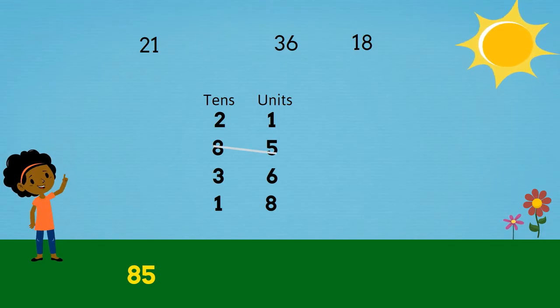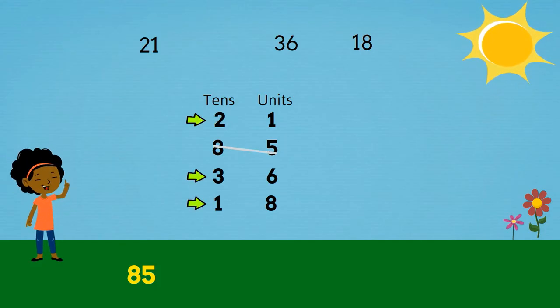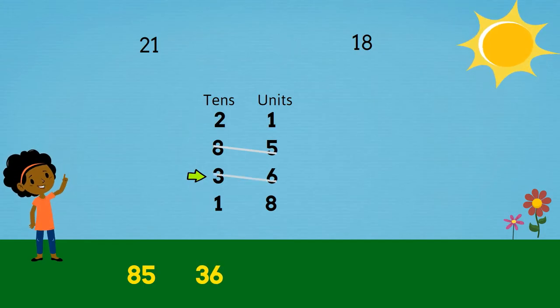Now we've got three numbers left. Which is larger? 2, 3 or 1? 3. So we'll put 36 down.